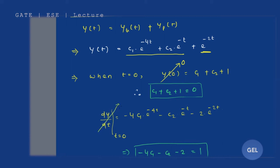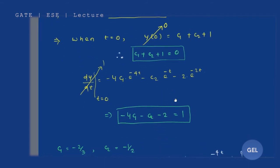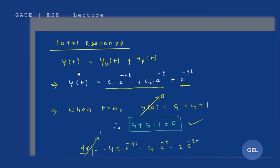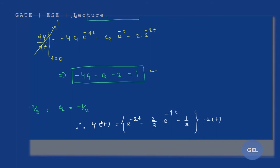dy/dt at t = 0 is given as 1. Substituting t = 0 into the derivative expression gives a second equation. Solving these two equations, you get c1 = −2/3 and c2 = −1/2. Substituting these values into the total response equation gives you the final answer. This is your complete answer using the standard homogeneous-plus-particular-solution method.